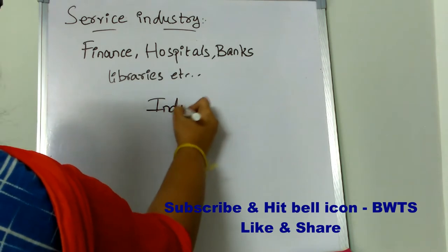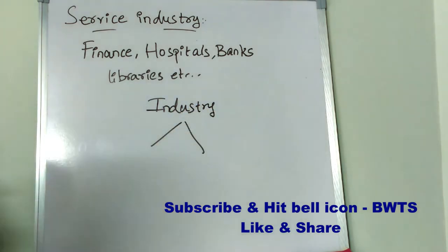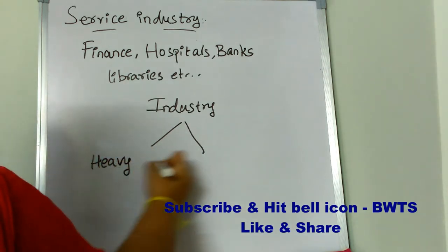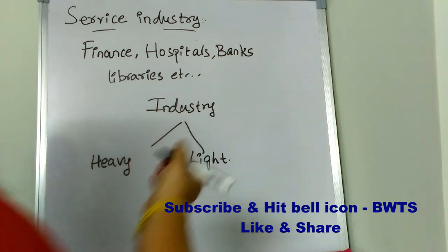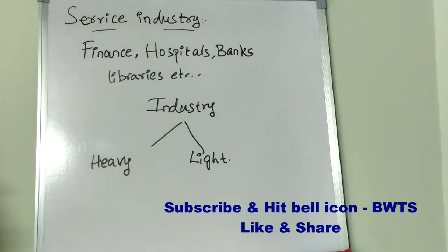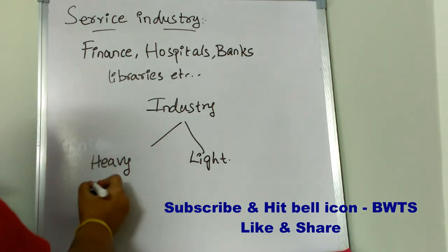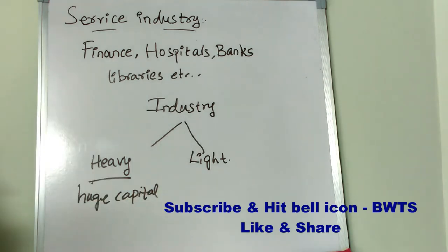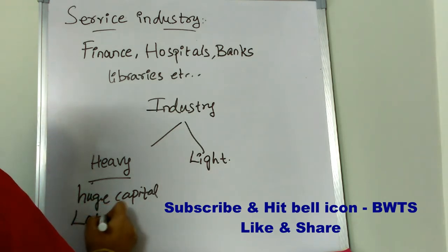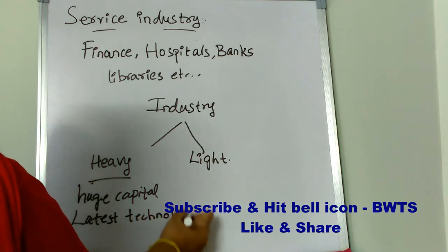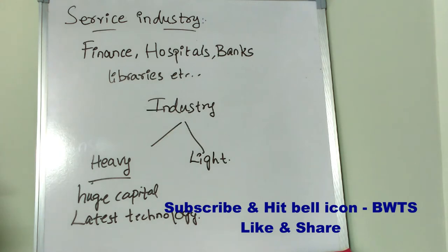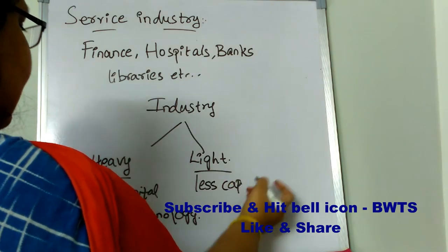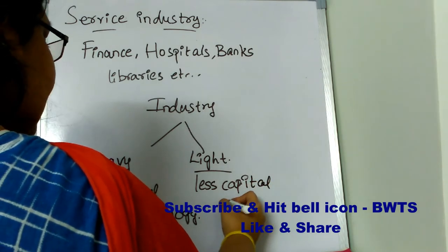Industry is mainly divided into two types: heavy industry and light industry. Heavy industry requires huge capital and the latest technology, along with high machinery and equipment. Light industry requires less capital and simple technology. These are the two main classifications of industries.